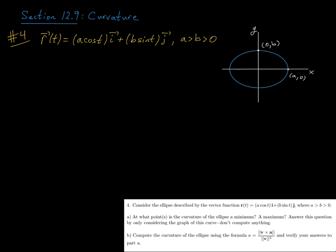Where would the curvature be a minimum? Well that's going to happen when our curve is the flattest, and that's going to happen up here at the top, with coordinate zero comma b, and at the bottom at zero negative b.